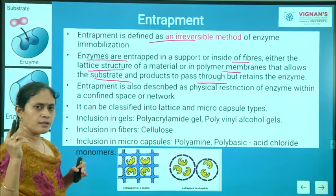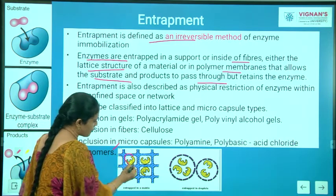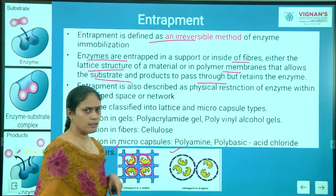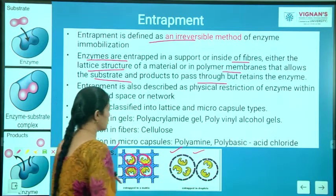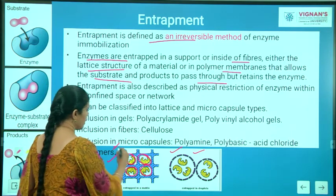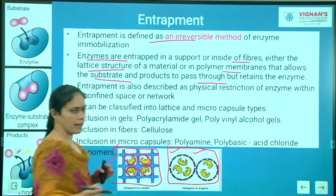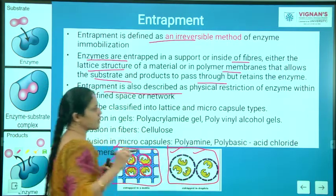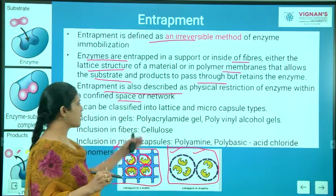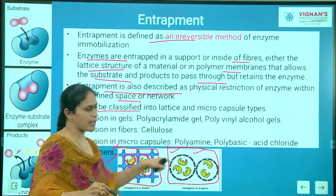There are two types of immobilization under entrapment: in one type, the enzyme is entrapped within a lattice — between fibers. In encapsulation, the enzyme is entrapped within droplets or within a gel. Encapsulation is one type of entrapment. Entrapment is also described as a physical restriction of the enzyme within a confined space or network, and it can be classified into lattice and microcapsular methods.